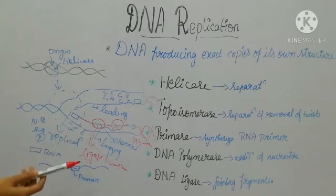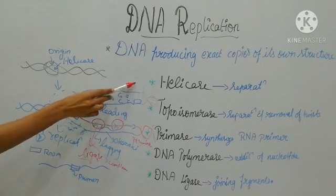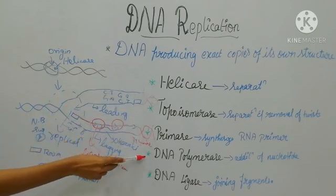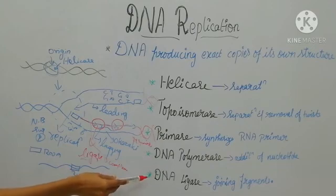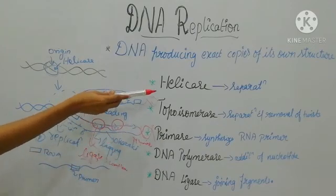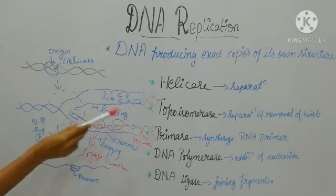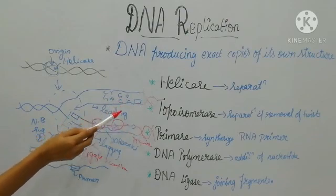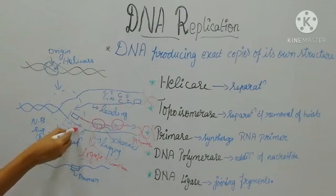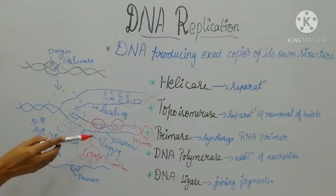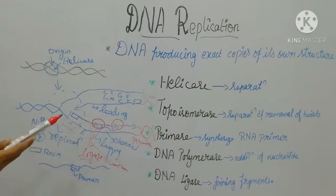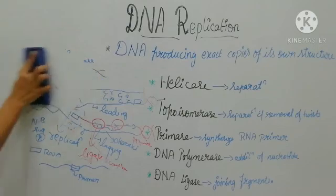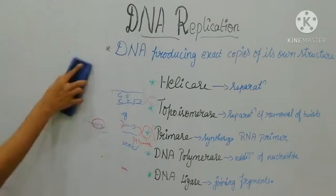This is the replication process. The enzymes involved are: helicase, topoisomerase, primase, DNA polymerase, and DNA ligase. Helicase separates the two strands. Topoisomerase separates the DNA strand away from the replication fork and removes the twist. Primase synthesizes the RNA primer. DNA polymerase adds nucleotides. DNA ligase joins the Okazaki fragments.